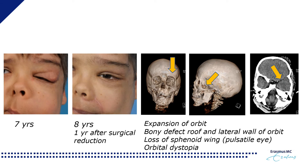On the CT scan you can see that the orbit became expanded, mainly due to defects in the orbital roof and the lateral wall of the orbit, and loss of the sphenoid wing. When the sphenoid wing is lost, the pulsatile movement of the brain is transmitted forward towards the eye, making the eye pulsatile — which you can appreciate on clinical examination. The orbital dystopia occurred mainly because of the loss of the roof of the orbit, with the intracranial content pushing downward on the orbit.